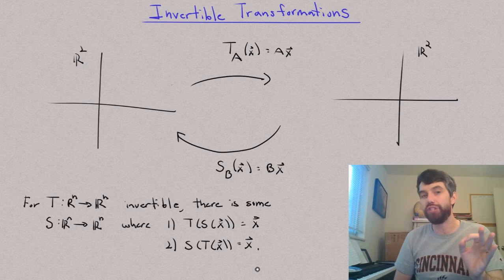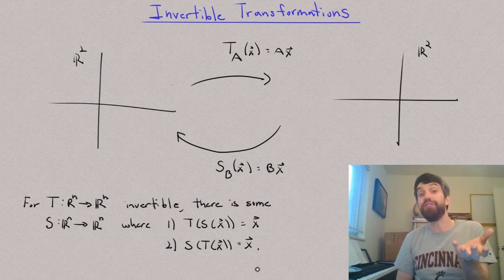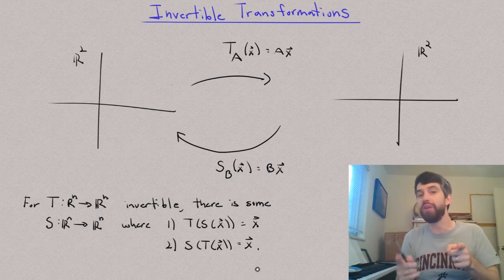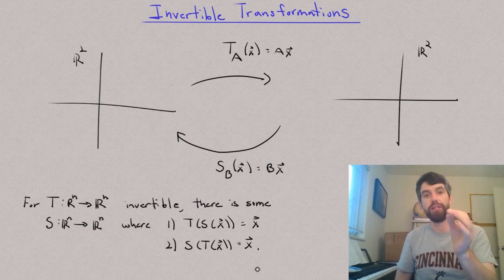This is completely analogous to the situation with matrices where you had a matrix A and you said, if it's invertible, then there exists an A inverse where A times A inverse or A inverse times A, either way you might do it, is going to be equal to the identity matrix.